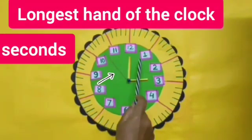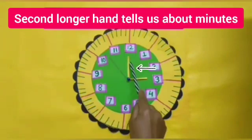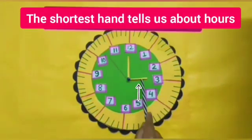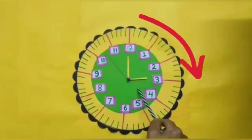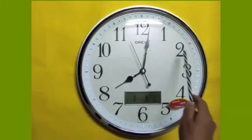There are 3 hands in this clock. The longest and the fast moving hand of this clock tells us about seconds. The second longer hand of the clock tells us about minutes. And the third shortest hand tells us about hours. This hand moves very slowly. All these 3 hands move in the same direction.